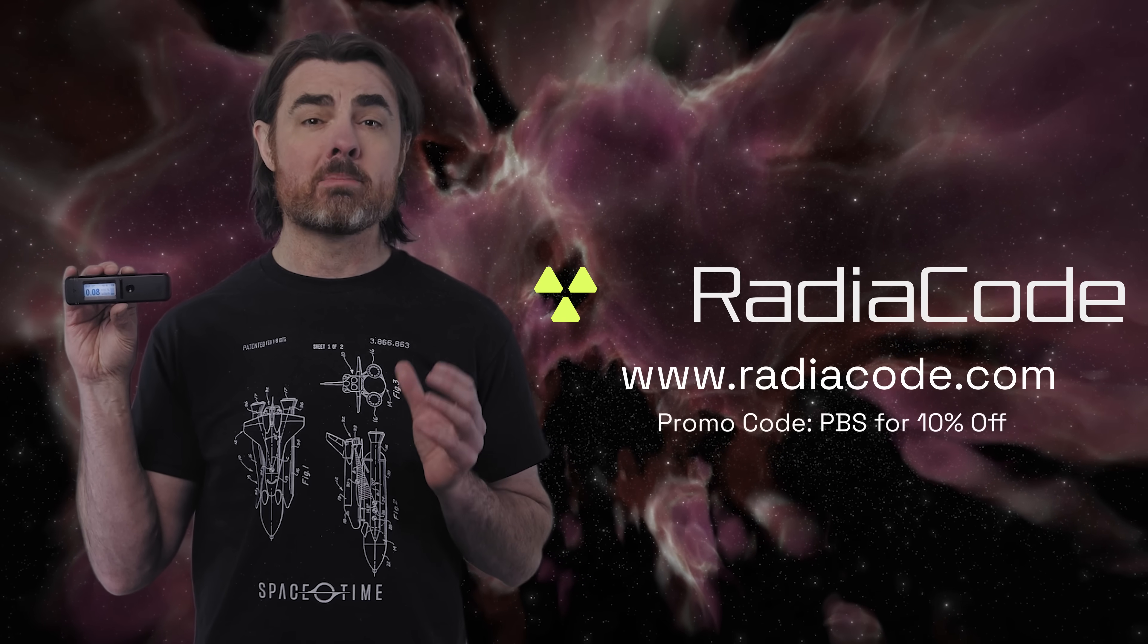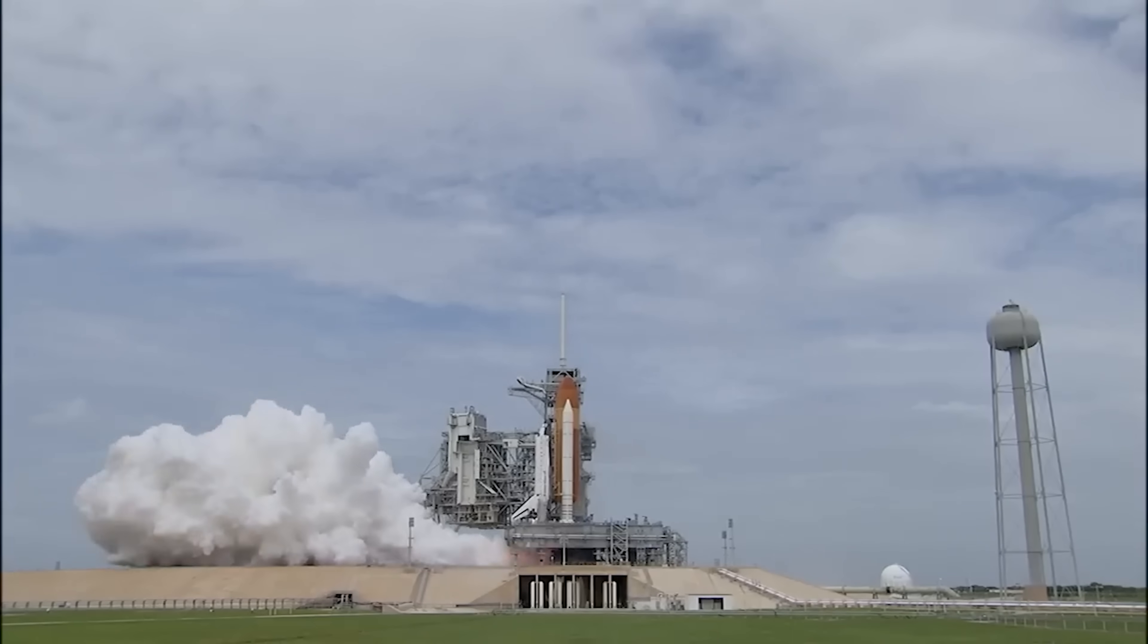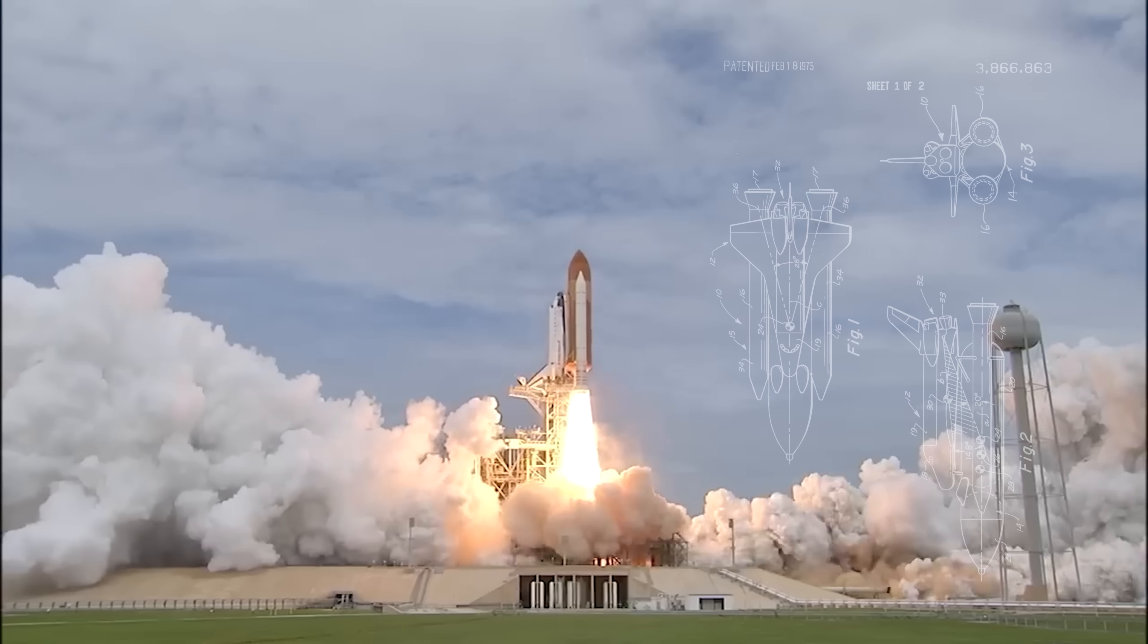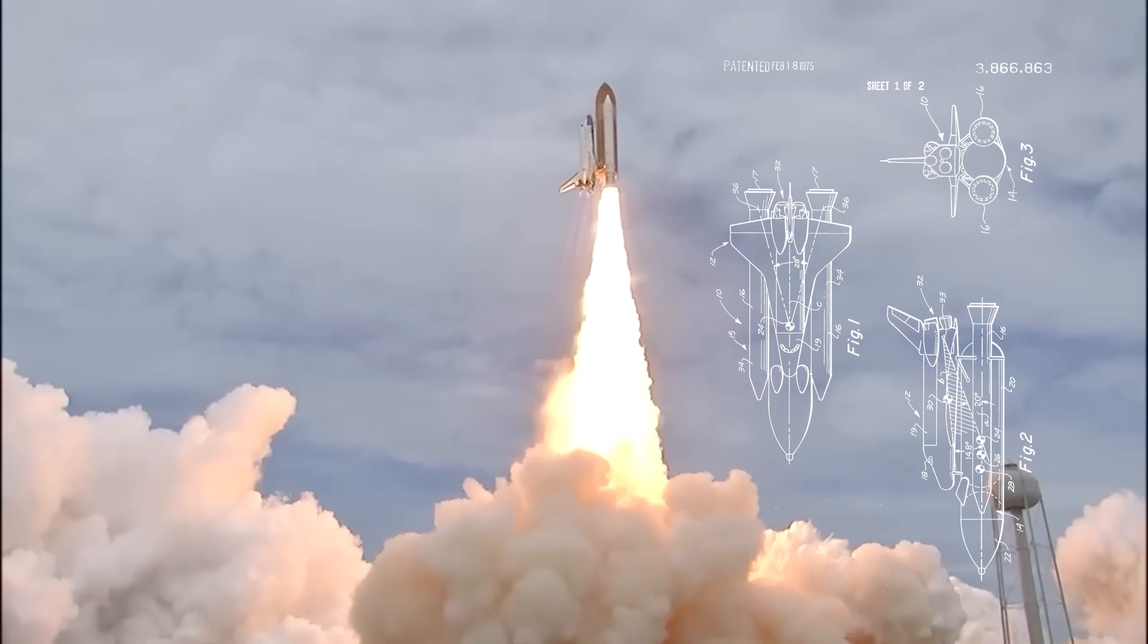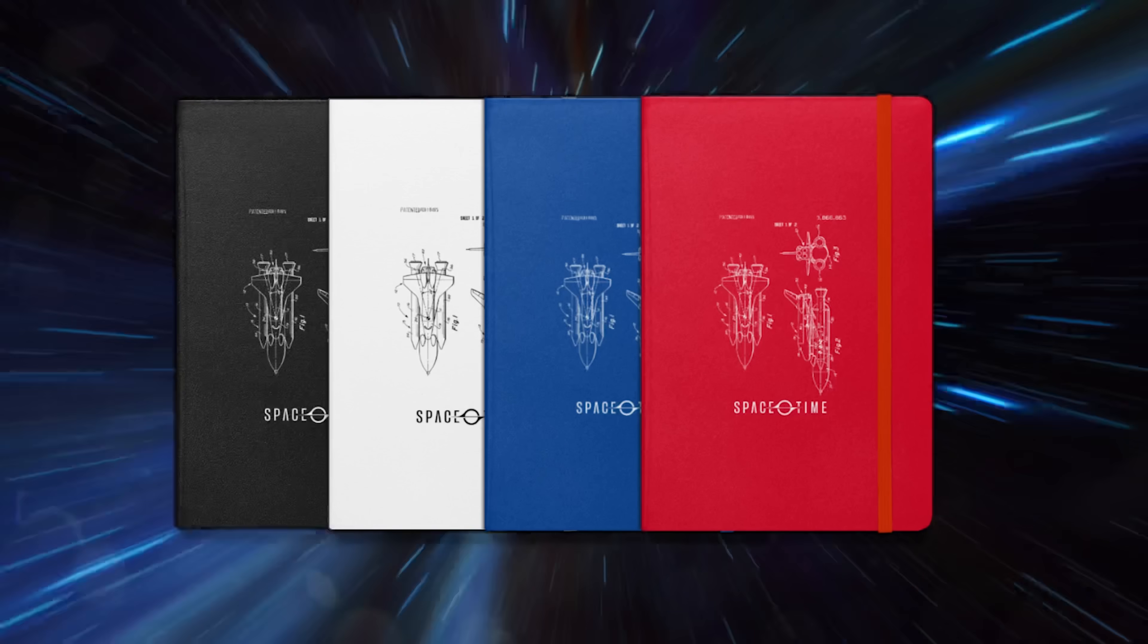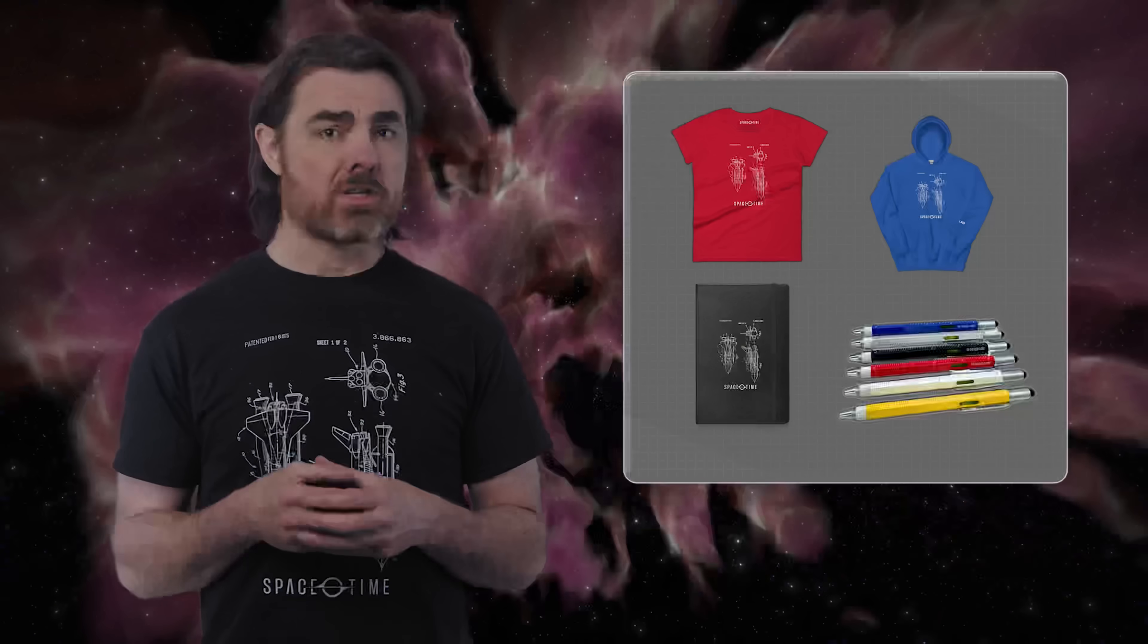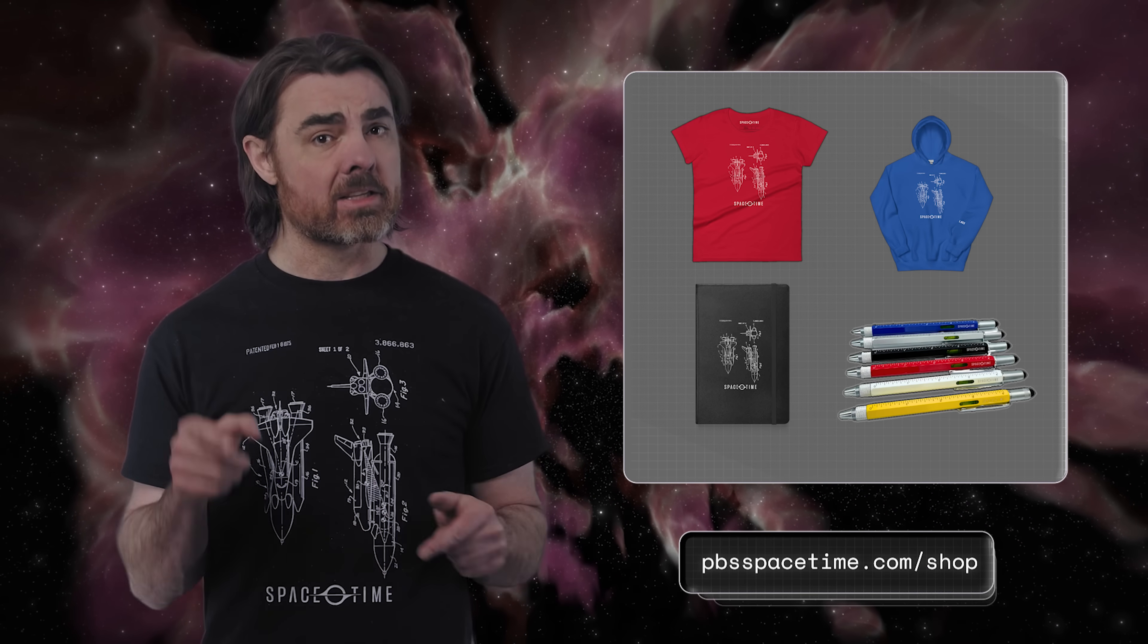Hey everyone. Before we go, we wanted to let you know we're celebrating the 50th anniversary of the Space Shuttle patent with some limited edition merch in the merch store. There's multicolored hoodies and t-shirts featuring the original patent, the first ever spacetime notebook, as well as a re-release of the multifunctional spacetime pen in new colors. You can check it out at pbsspacetime.com/shop. There's a link in the description.